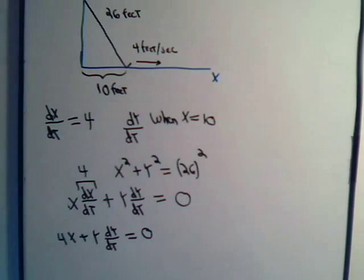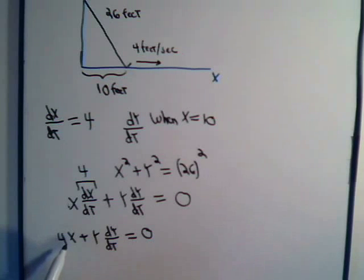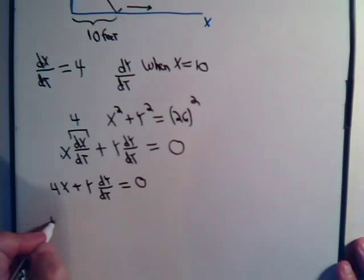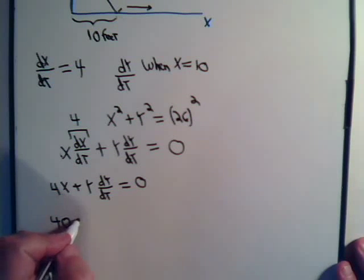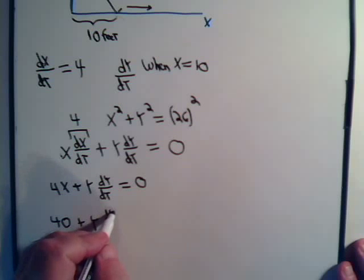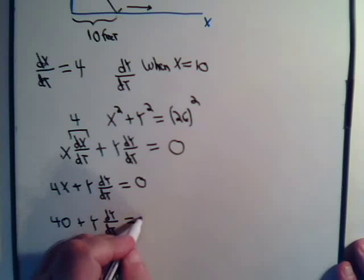And we were asked to find dy/dt when x equals 10. So this would be 4x plus y times dy/dt equals 0. And we haven't put in a value for y yet.